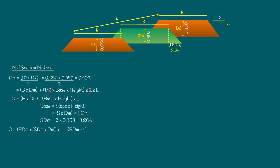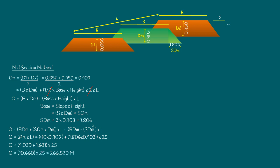The area of the embankment is (b × dm) plus (sdm × dm), multiplied by length l. Accordingly, the value is (10 × 0.903) plus (1.806 × 0.903), into 25, which equals 9.030 plus 1.631, into 25. This gives a mean area of 10.661, multiplied by length 25, which equals 266.525 m³.